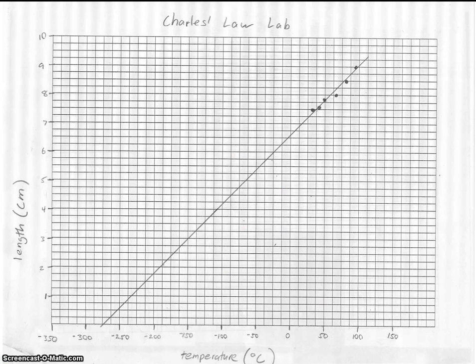In the Charles Law Lab, you are asked to determine the relationship graphically between temperature in degrees Celsius and the length of a sample of trapped gas inside of a capillary tube. What you did is you plunged a capillary tube into hot oil. You can see the oil was somewhere around 100 and 120 degrees or so. Hard to say from looking at the graph.